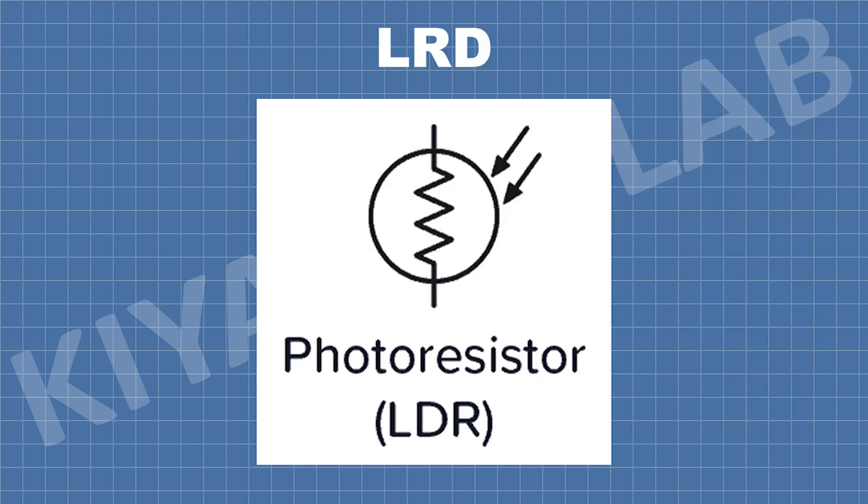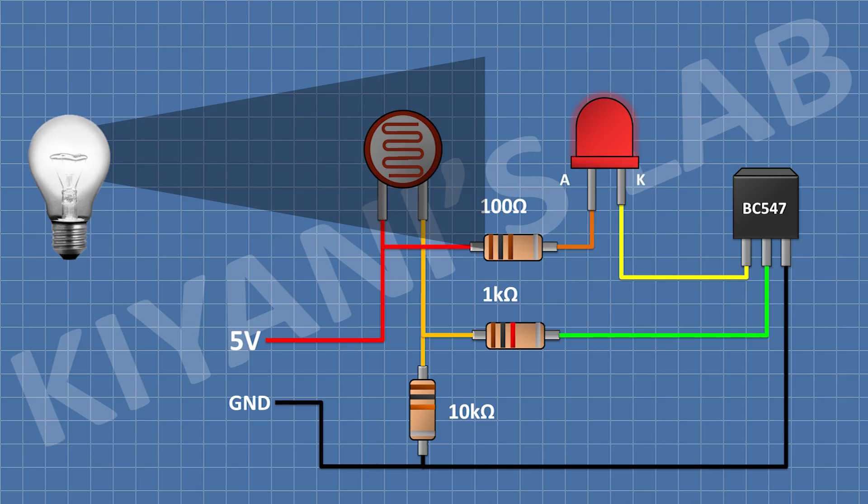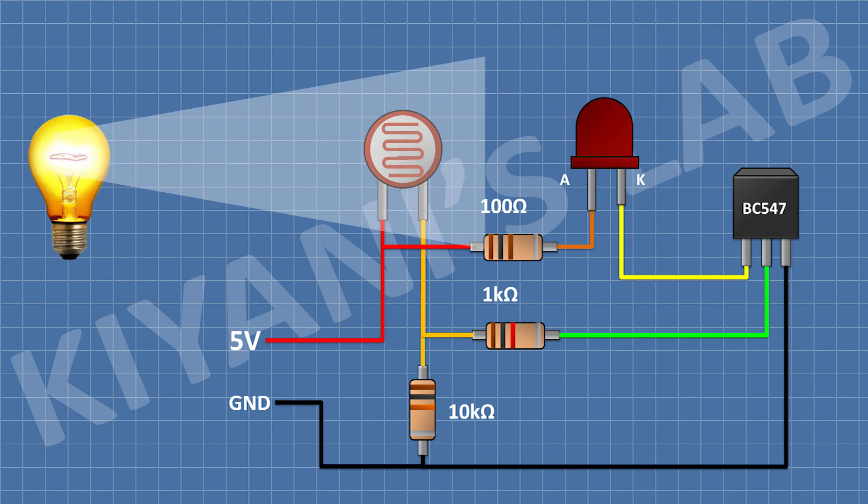This is the symbol of LDR. These are some LDRs. Now let's see some applications of LDR. Imagine you want to build a circuit that automatically turns on a light when it is dark. You can use an LDR with a resistor and a transistor to make that.